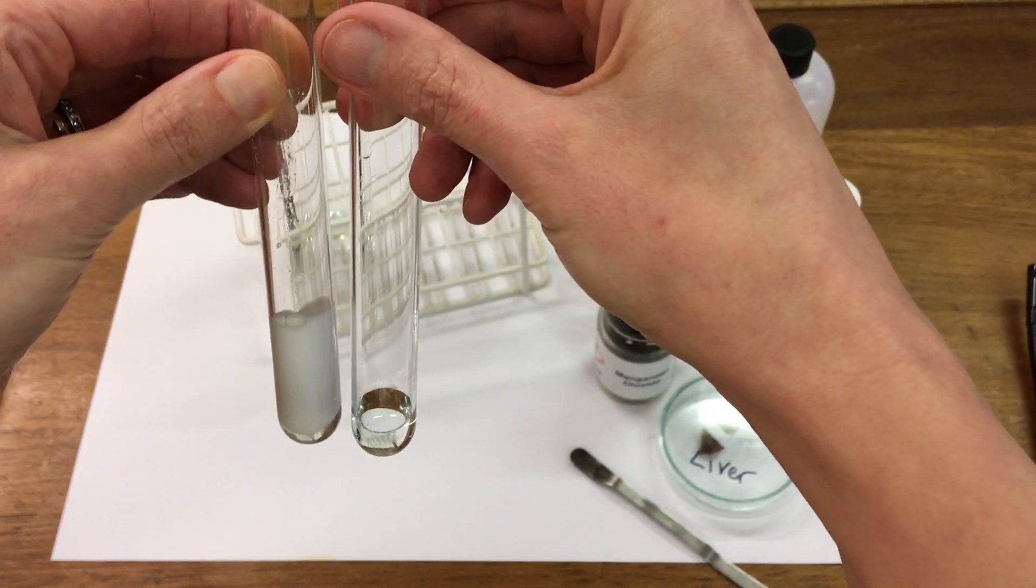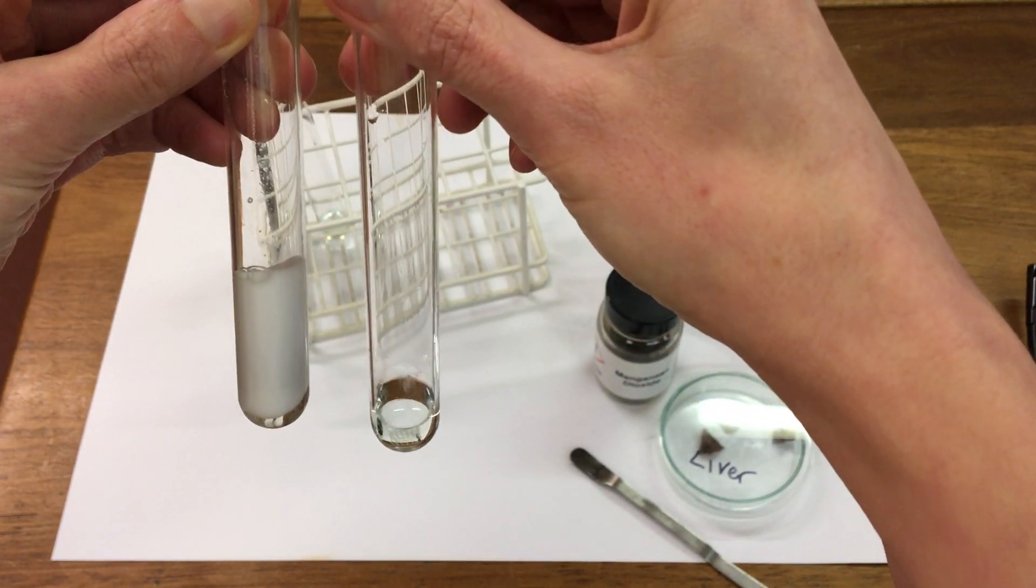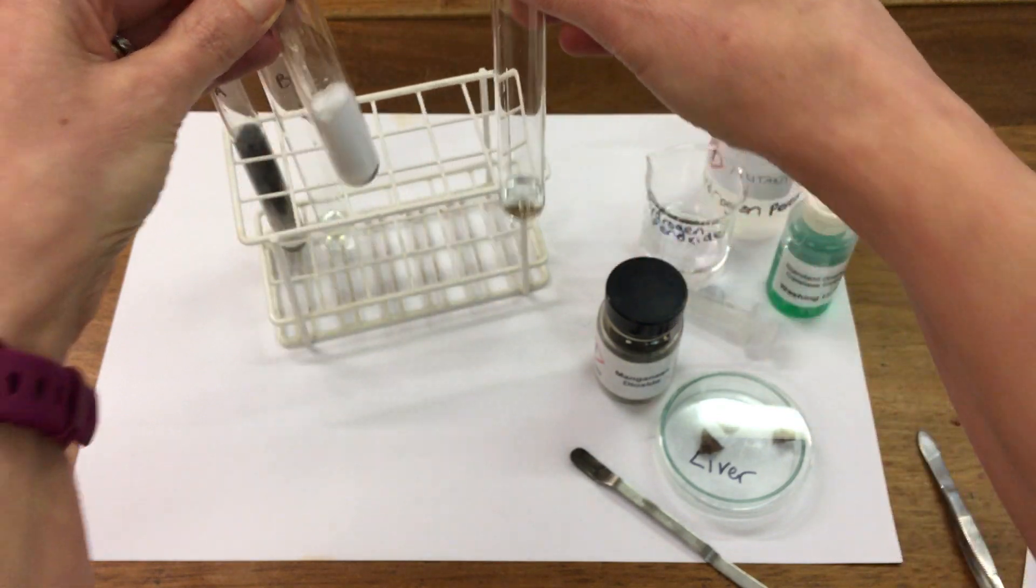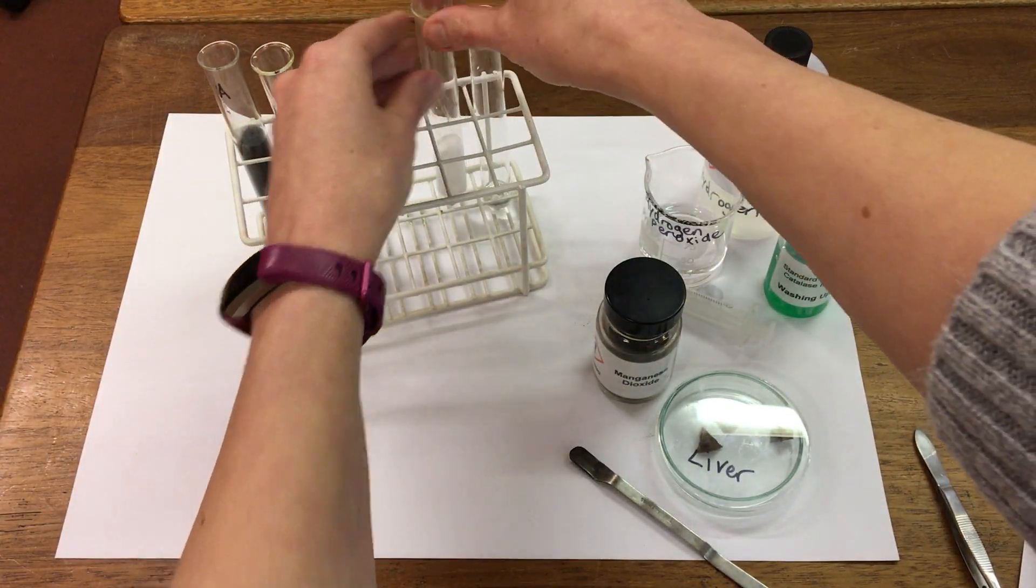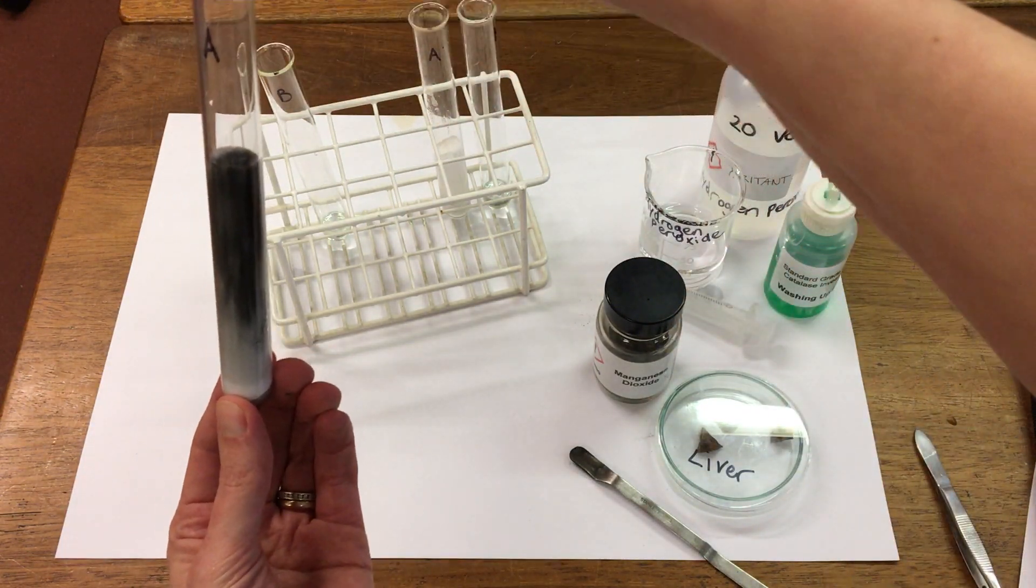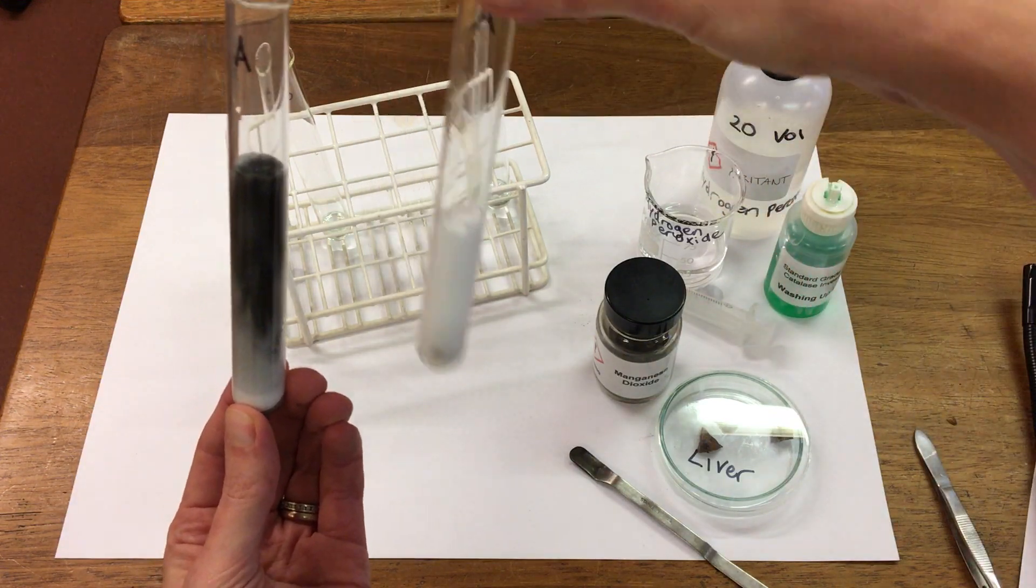So by using detergent we can measure the amount of gas being produced because it's trapped in the foam. So again this is the manganese dioxide and this one is liver.